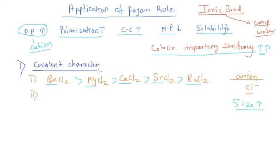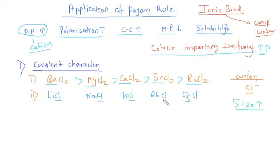We can also take the example of alkali metals: LiCl, NaCl, KCl, RbCl, and CsCl. Here the anion is again common — chloride. The cation is an alkali metal. Lithium is the smallest in size, so its polarization power will be the highest, and therefore the covalent character will keep on decreasing down the group.